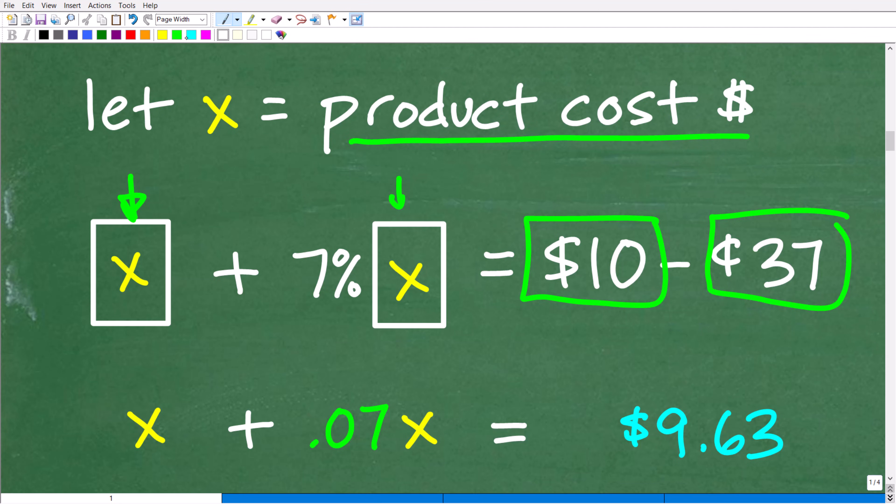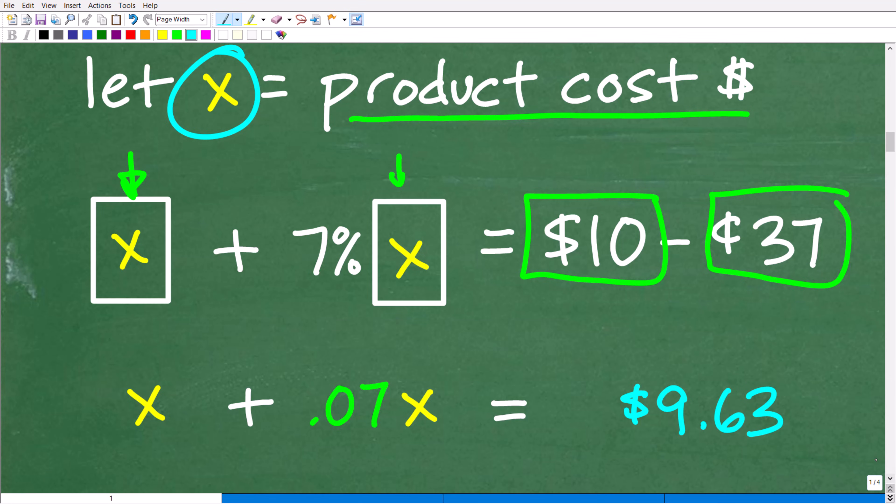Right, which represents the cost of this product. Well, this isn't going to help us out unless we can build an equation to solve for this variable. And we certainly can because we kind of already have this model of an equation.